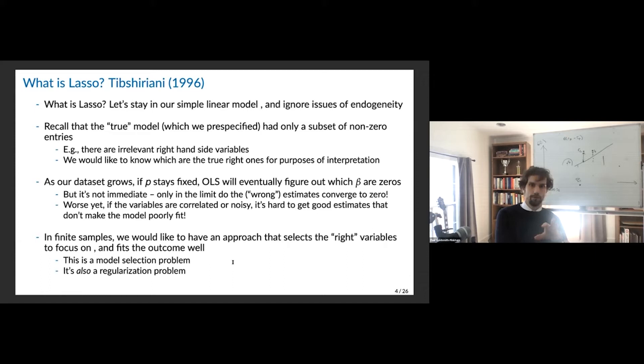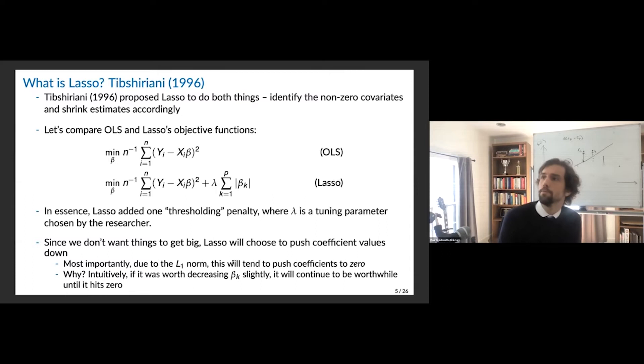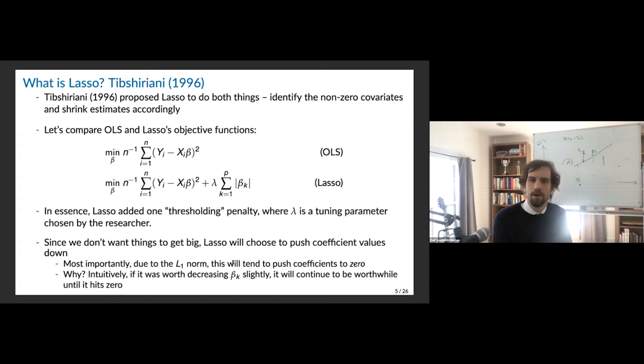Lasso was proposed by Tibshirani in 1996, where he proposed this penalization method for doing both things simultaneously — potentially identifying the non-zero covariates and shrinking the estimates accordingly. The top line is the objective function for OLS: minimize the sum of squared errors. Lasso, in contrast, is minimizing the sum of squared errors subject to a constraint. This is the Lagrangian way of writing it. You could say: minimize the sum of squared errors like OLS, but penalize so that the sum of the beta k's has to be less than some value.